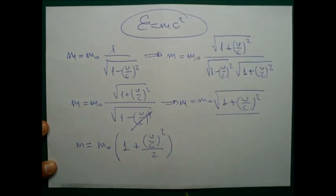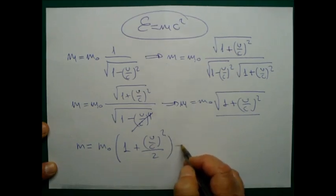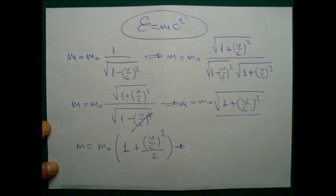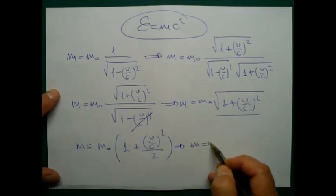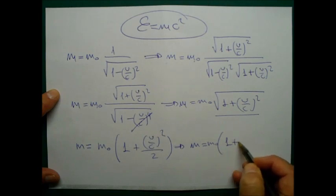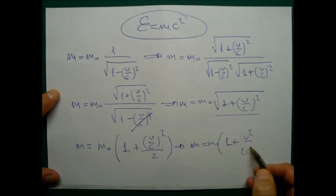M equals M₀ times 1 plus V over C squared over 2. These are the same, approximately, as I showed you before. And rearranging the equation, I get M equals M₀ times 1 plus V squared over 2 C squared.